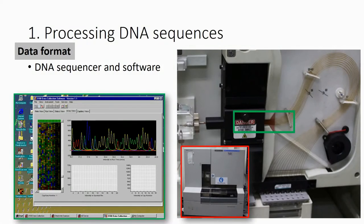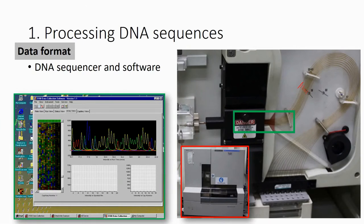This is a capillary machine. You can see lines here — one, two, three, four, five — there are 16 capillaries in total. In a single run, they can analyze 16 of your PCR products. Inside each capillary, there's a polymer, like a gel, similar to electrophoresis. Shorter fragments move first. Then a laser hits the dye, and a camera captures the signal. This is exactly how it looks inside each capillary.